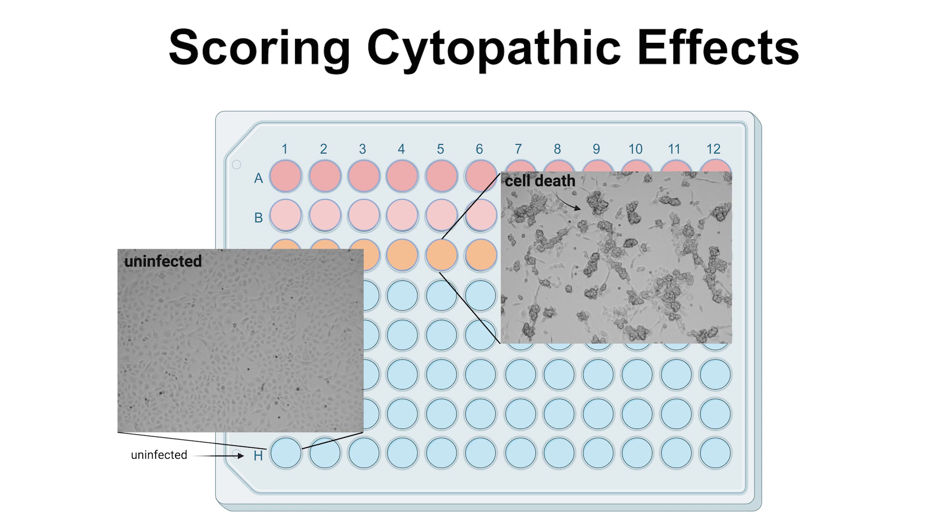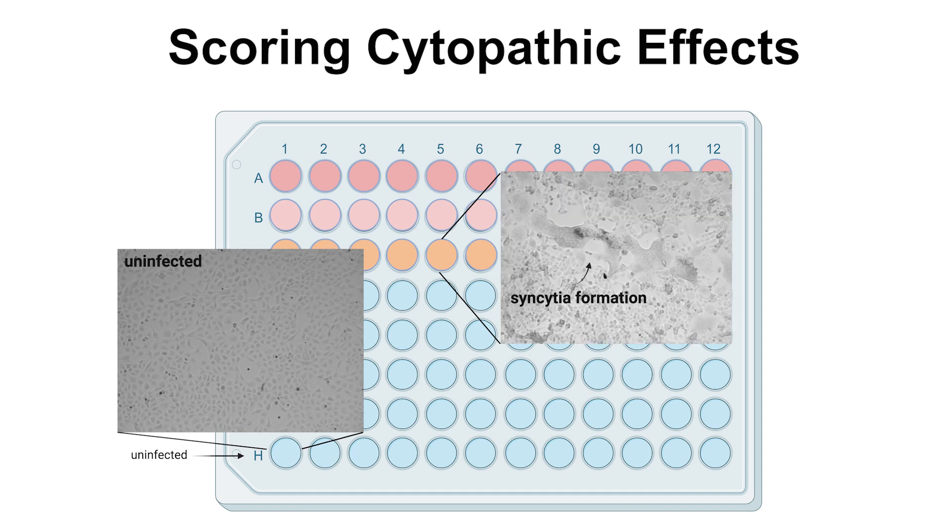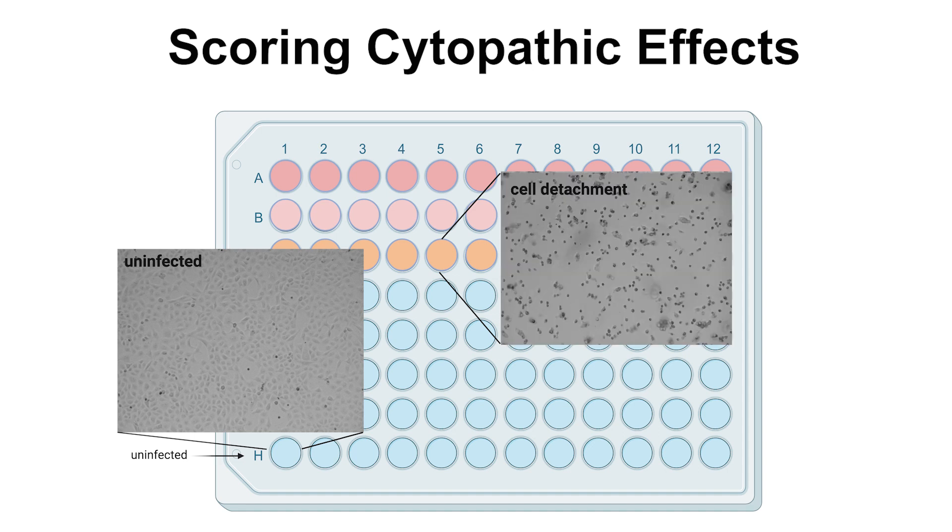Typically, this is indicated by cytopathic effects, which are changes in the cell's appearance caused by the virus and observable under a microscope. Some common cytopathic effects include cell death, syncytia formation, and cell shrinkage and detachment.